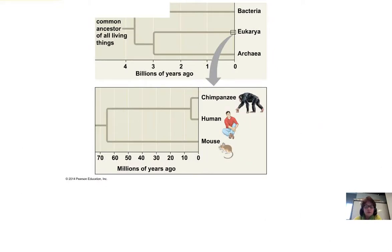The mouse and the ancestor to chimps and humans shared a common ancestor over 60 million years ago, and more recently we split from the chimps — our recent common ancestor with them is about 5 million years ago. We'll be discussing that when we get into evolution.